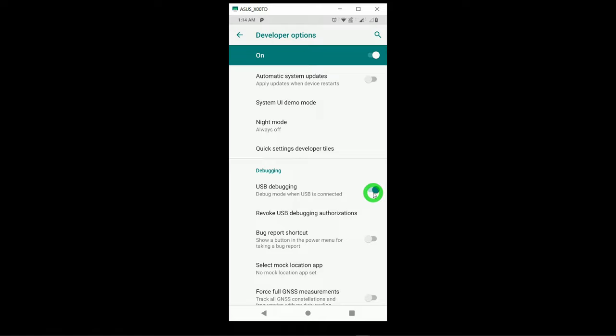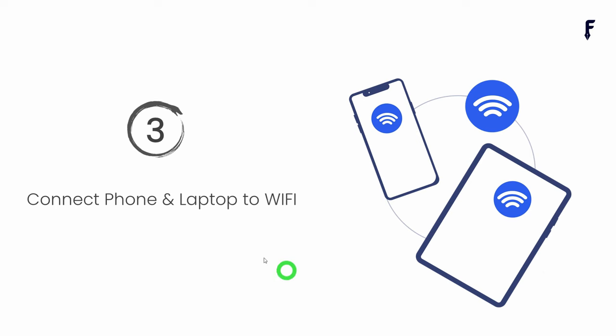Step number three is: connect your phone and laptop to Wi-Fi. There are two different situations here. Situation number one: your home has a particular Wi-Fi from a specific device — in this case you can simply connect both your laptop and your phone to that same Wi-Fi network, which is what I have done in this example.